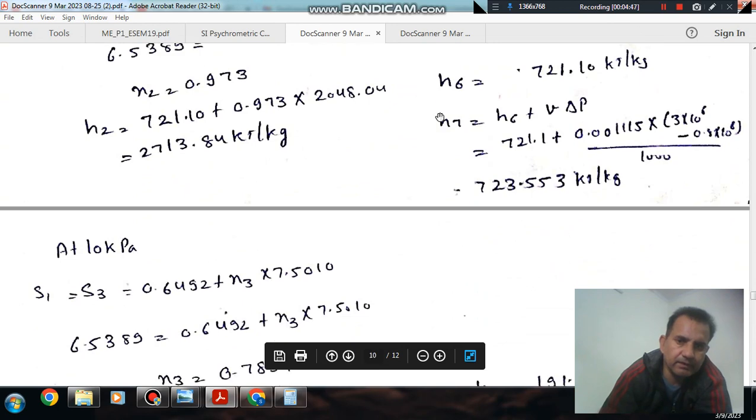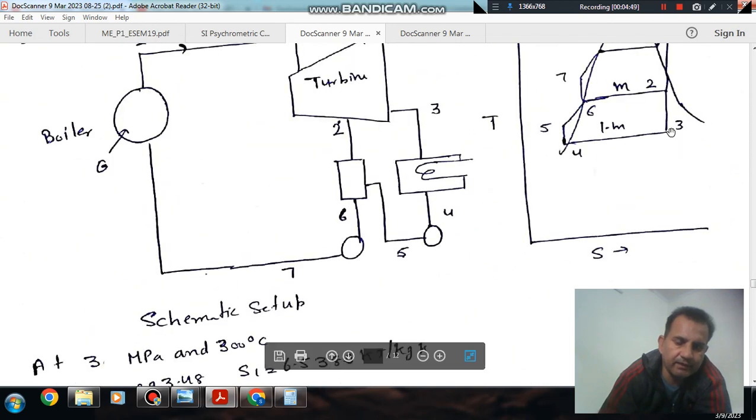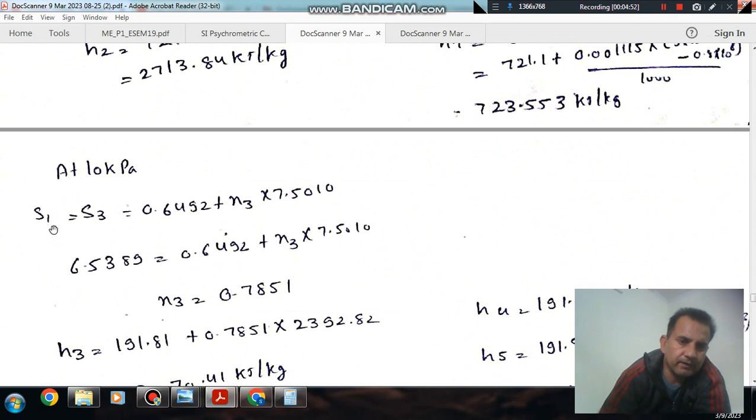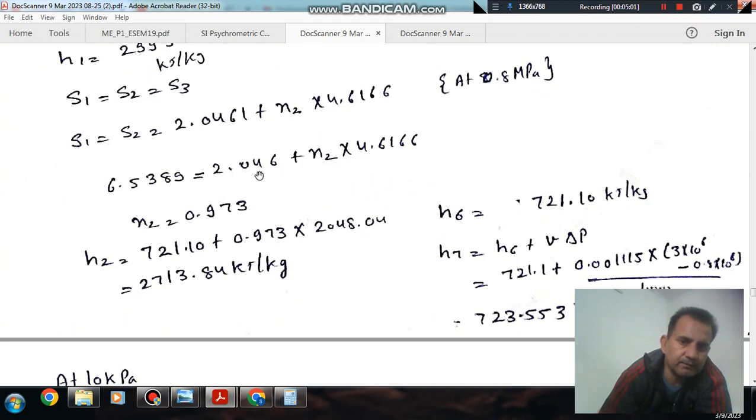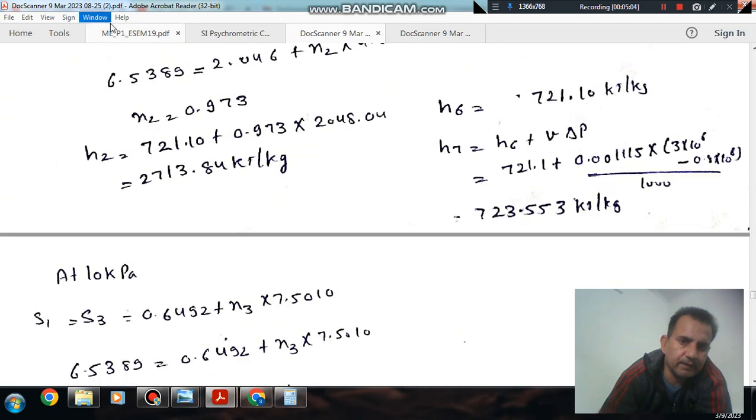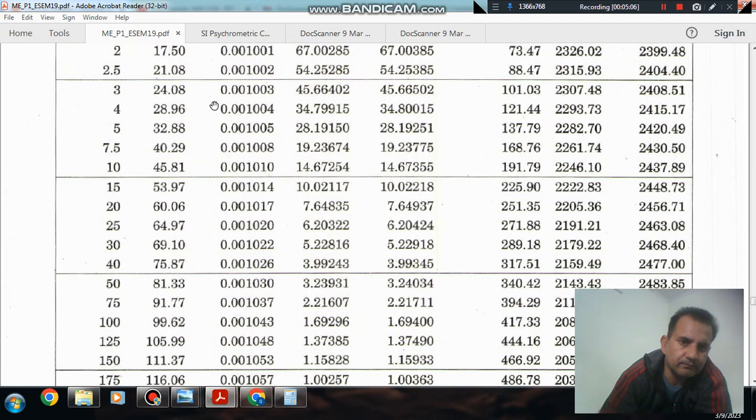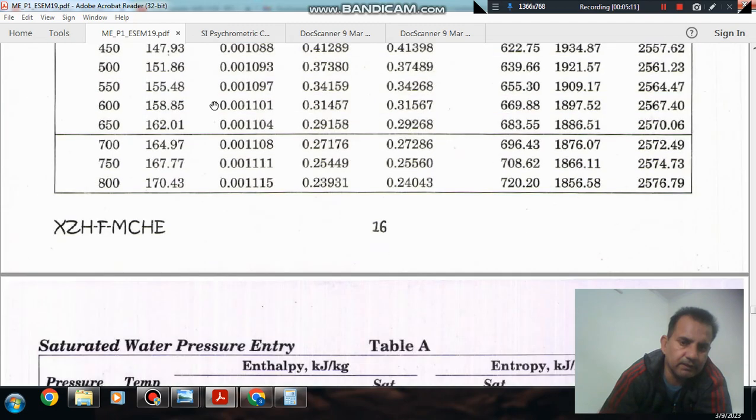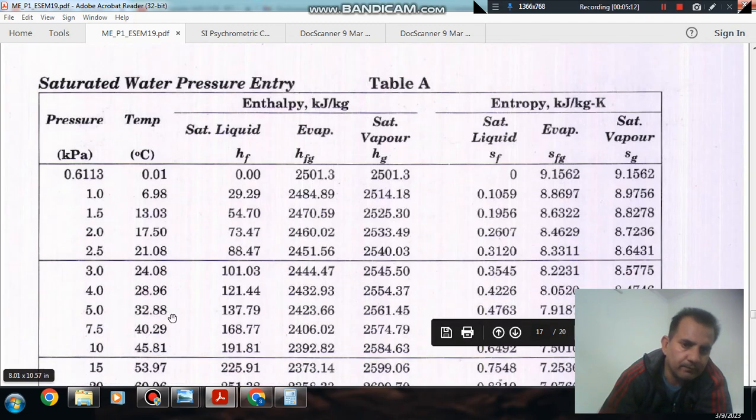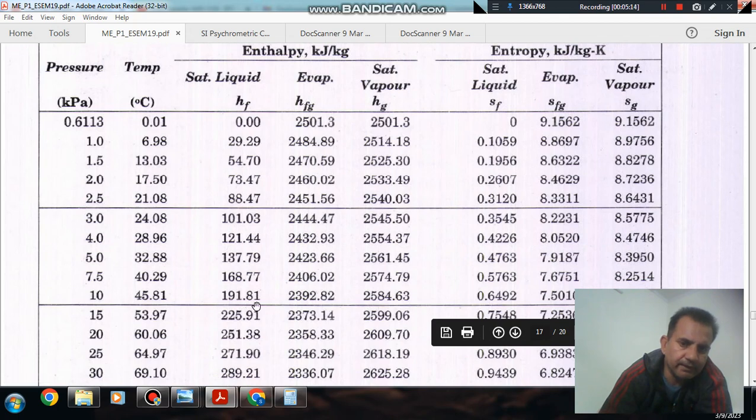Now, similarly, at point 3 where the pressure is 10 kPa, we can equate entropy S1 is equal to S3. So S3 is 6.5389. At pressure 10 kPa, the liquid entropy Sf is 0.6492 and evaporation entropy Sfg is 7.5010.